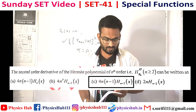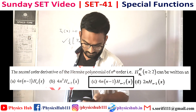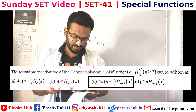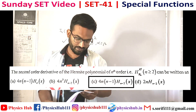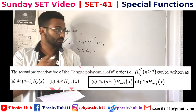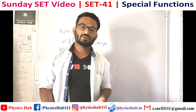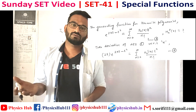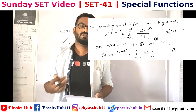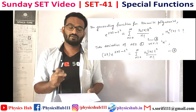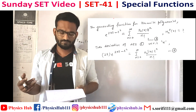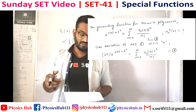The second question: the second-order derivative of the Hermite polynomial of nth order, Hn''(x) for n ≥ 2, can be written as? To find the solution, we use the generating function for the Hermite polynomial. The generating function is e^(2xt - t²) equals the sum from n = 0 to infinity of Hn(x) t^n divided by n factorial.